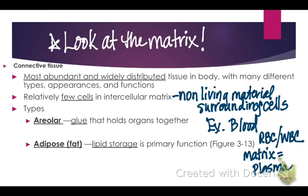Connective tissue is abundant — there's lots of it in your body — and it's widely distributed, meaning it's found all over. There are many different types of connective tissues; they appear very different from each other and have very different functions. Another characteristic is that they don't have a lot of cells.